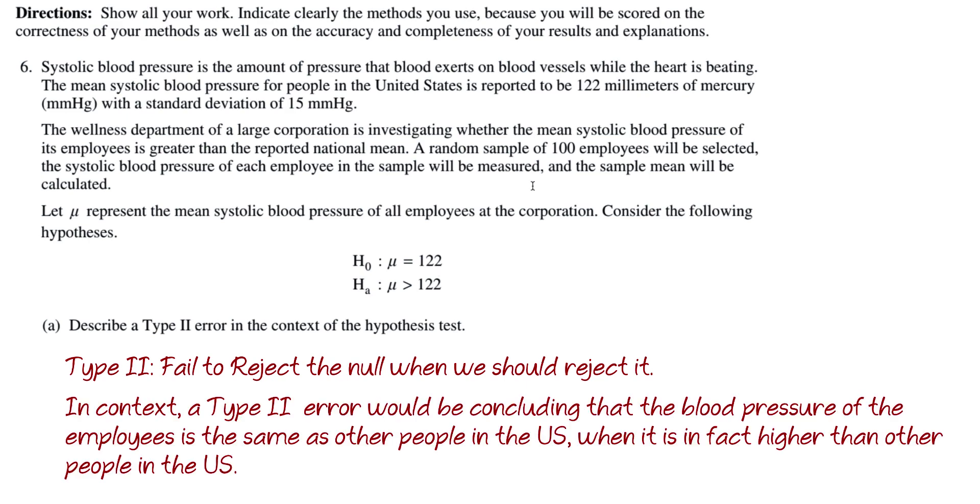So a Type 2 error would be concluding that the blood pressure of the employees is the same as other people in the U.S. when in fact it is higher than other people. That would be a Type 2 error for this test.